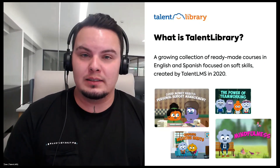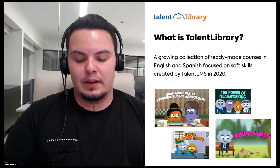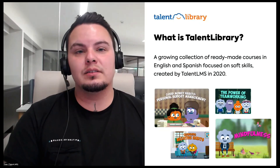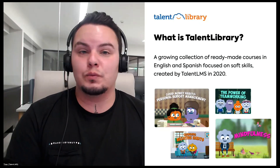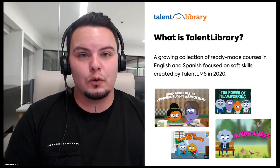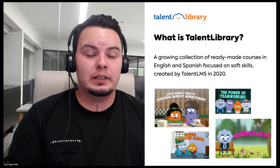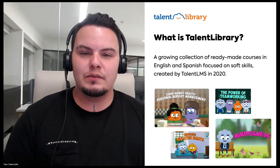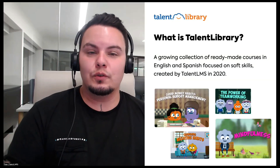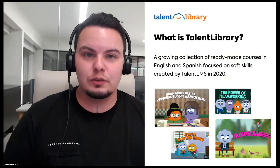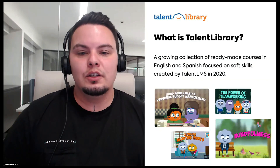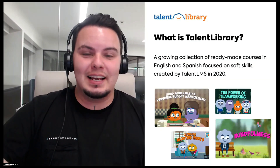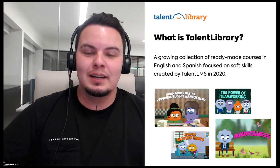With Talent Library courses, you have a library already available — you can start sharing those courses right away. They're in SCORM format, include a video, include a quiz, and some have takeaway material as well. So you can have a robust set of ready-made courses ready to distribute, and then start creating your own Talent LMS courses on top of that.